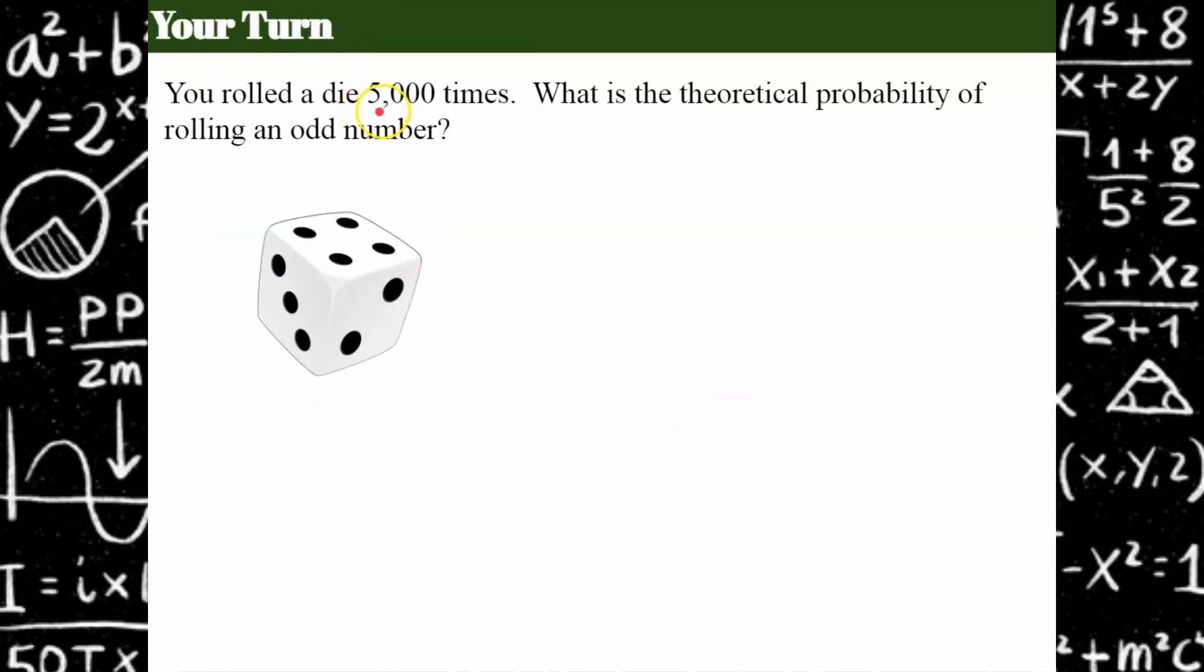We rolled a die 5,000 times and we want to know what is the theoretical probability of rolling an odd number. In theory, what do you believe should happen? Please pause, answer the question, and come back when you're ready.